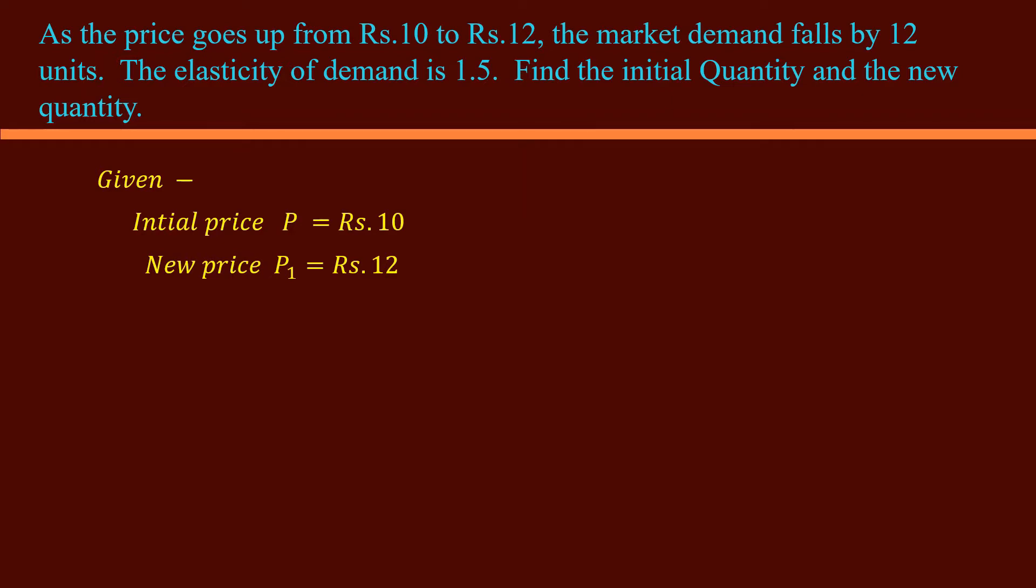Initial quantity, it is not given. We shall have it as Q. New quantity, not directly given. The problem says the market demand falls by 12 units after an increase in price. If the old quantity is Q units, then the new quantity must be Q minus 12 units.